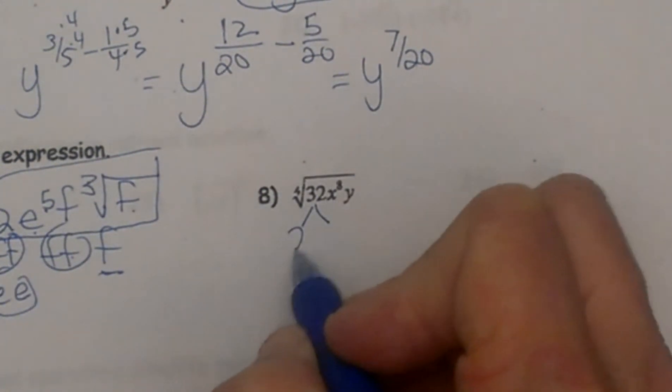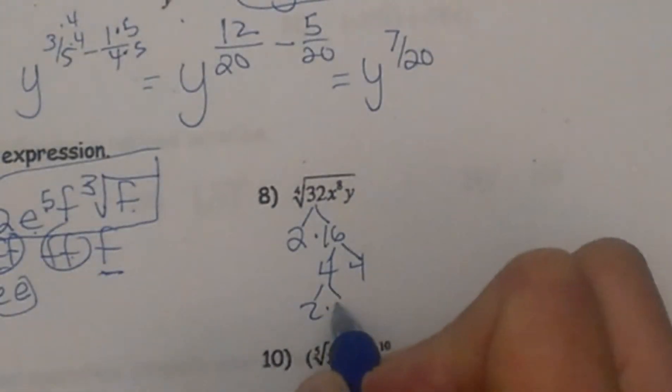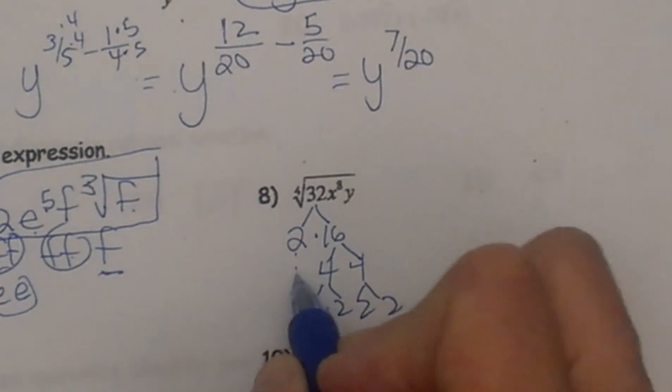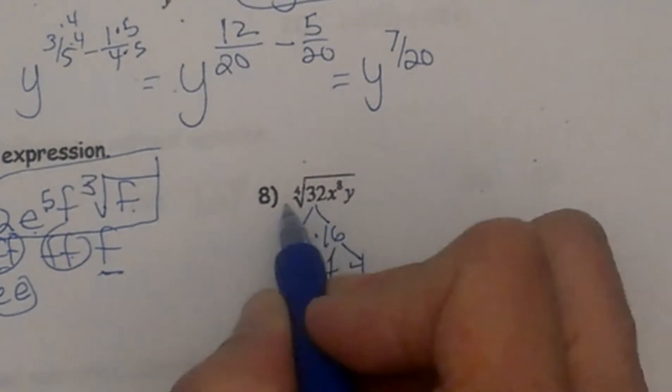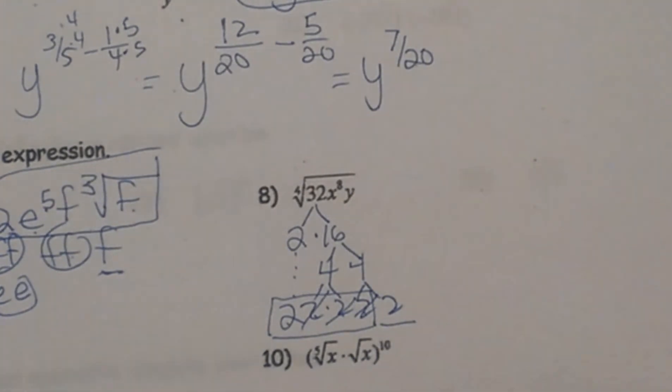32 breaks down to 2 times 16, and 16 breaks down to 4 and 4, and the 4's break down to 2's. So let me bring this one down. Do I have any groups of 4? Well I have 1, 2, 3, 4, 5 2's, so here is a group of 4. The 4th root—I can take out a 2 here, but I have a 2 left under the radical.